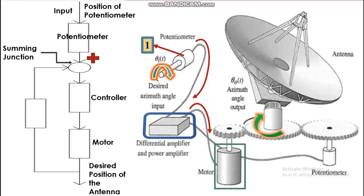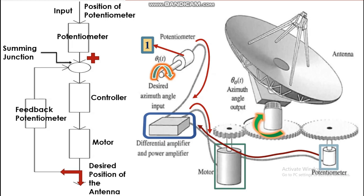The antenna position is continuously monitored by a feedback potentiometer, or feedback transducer. This position is also converted into a signal the controller can understand, in the same way as the input transducer. That signal is sent back to the summing junction as negative. So the input signal represents the desired position, while the feedback signal represents the actual position. The difference — desired (positive) minus actual (negative) — yields the error signal, which is fed to the controller to decide the direction of motor rotation.